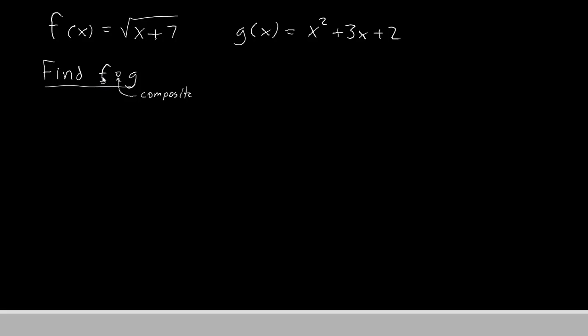To do this, you want to start with the letter that's written first, and start by writing that function. So we'll write down the function for f. That's root x plus 7.